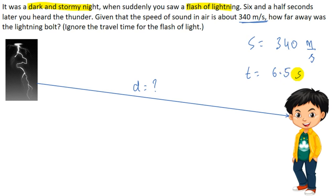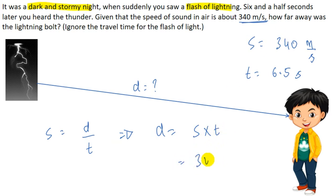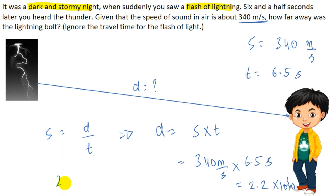We know that speed equals distance over elapsed time, so distance equals speed multiplied by time. Speed is 340 meters per second and time is 6.5 seconds, giving us 2.2 × 10³ meters, or 2.2 kilometers. That is the answer for this question.